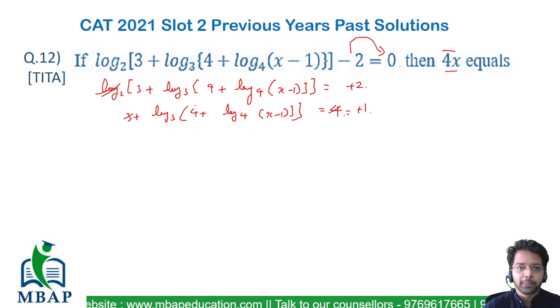Now we can remove log base 3 the same way. This will become 4 + log base 4 of (x - 1) equals 3 raised to 1, which is 3.